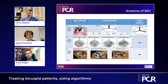CT planning is absolutely critical. On this slide we are describing the various categories of bicuspid phenotypes. The most well-known is the SEVAS type, which describes the number of raphae: type 0, no raphae; type 1, by far the most common phenotype with one raphae; and type 2, which is really quite rare.